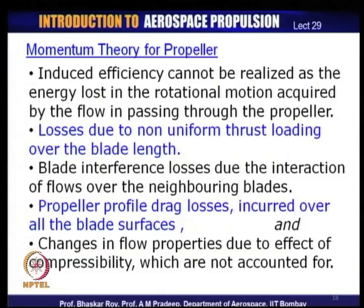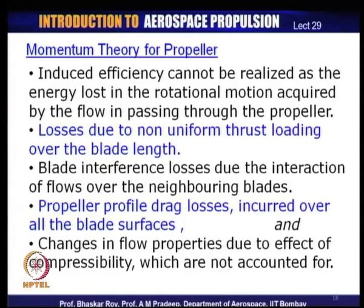In an actual propeller you have three or four blades and the rest of the area is open. When rotating, these blades have aerodynamic interference between each other — the wake of one blade could interfere with the wake of another, or flow from one blade could interact with another. This aerodynamic interference is totally neglected in the momentum theory, which is another reason for the difference between what we calculate through momentum theory and what actually happens in propeller operation.